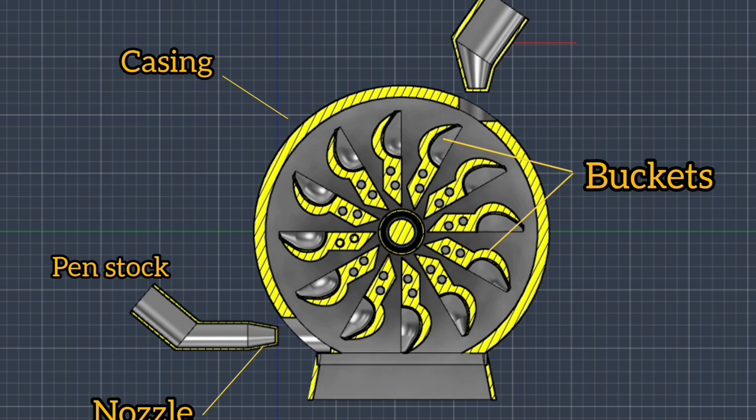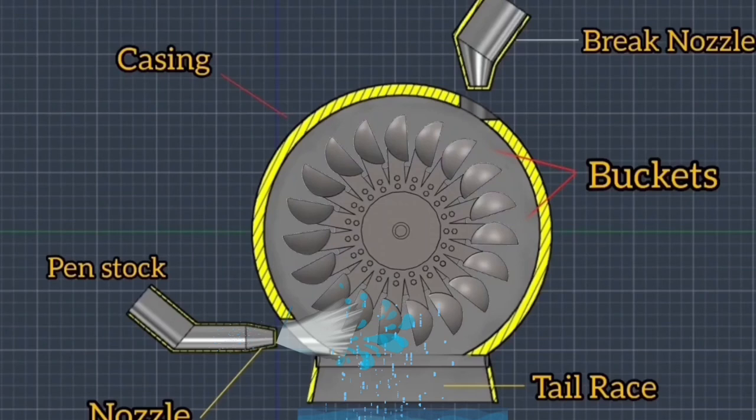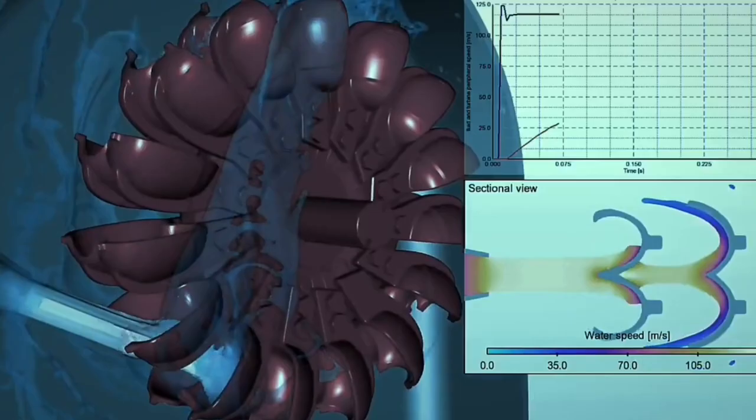with high kinetic energy enters the nozzle and gets converted into high velocity, striking the buckets. As it strikes the buckets, it starts to rotate at high speed and produces an impulsive force. This is the analysis of the Pelton wheel.